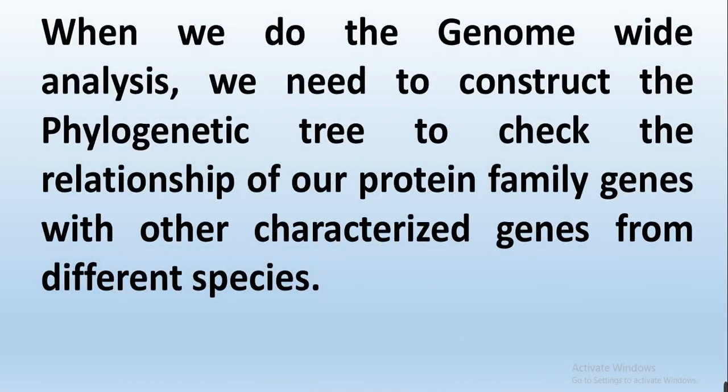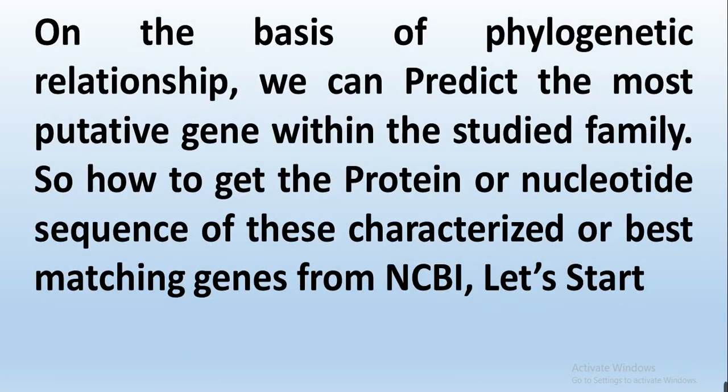When we do genome wide analysis, we need to construct a phylogenetic tree to check the relationship of our protein family gene with other characterized genes from different species. On the basis of these phylogenetic relationships, we can predict the most putative gene within the studied family. There are two ways to get the characterized genes: one is to read published papers or articles related to that family which mention genes showing different functions that have been characterized.